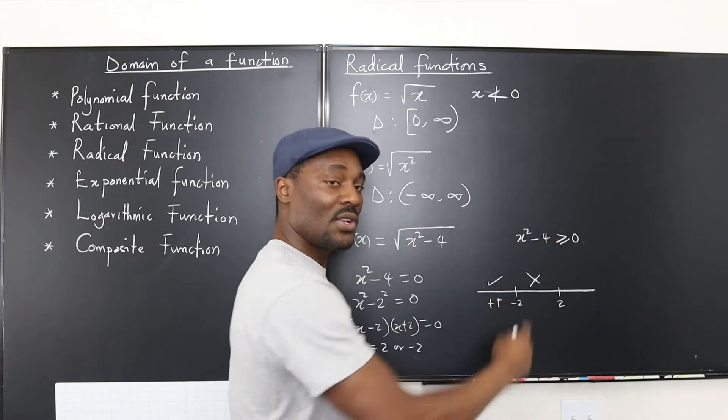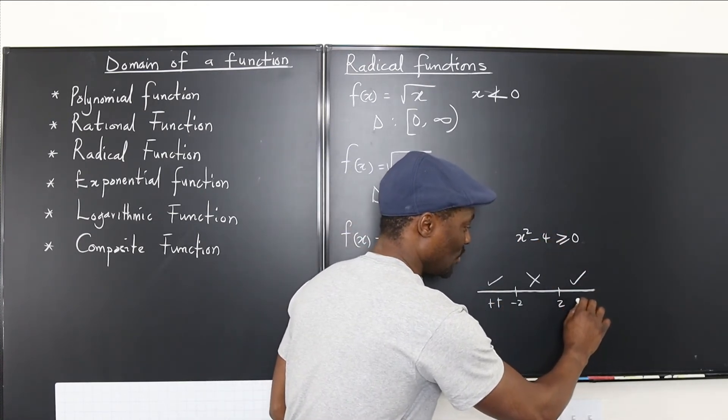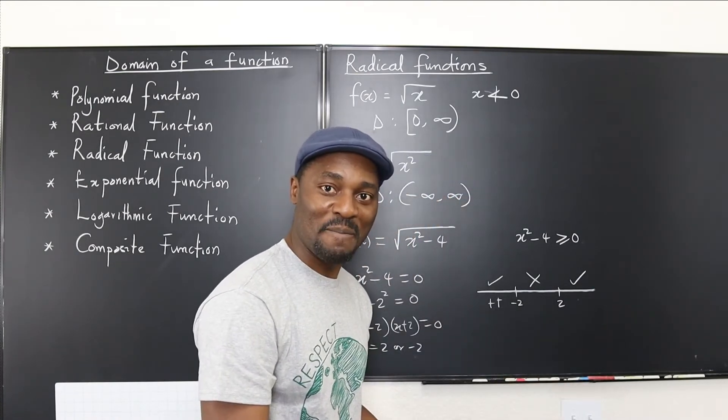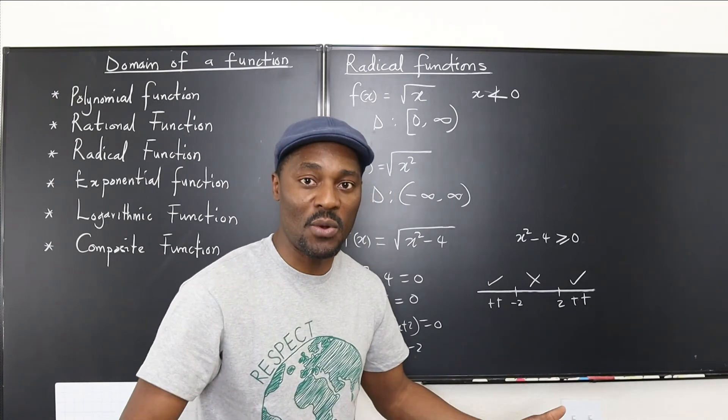So I go to the third one and I say, plug in 3. Well, I'm still going to get positive 5. So this area is accepted. And now I know my domain because I'm only looking for positive values or at least zero.